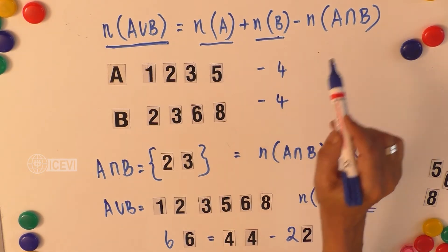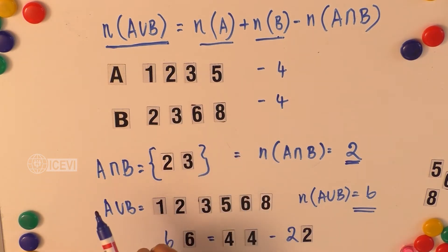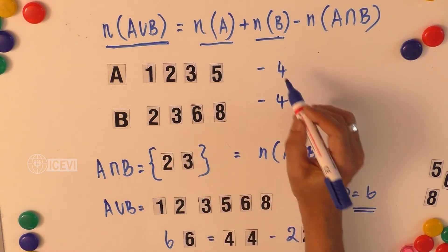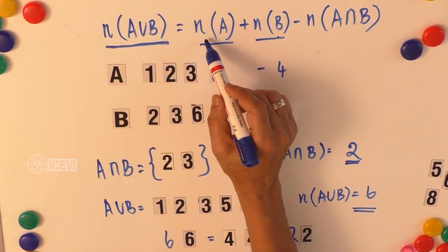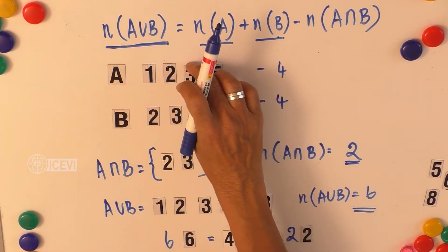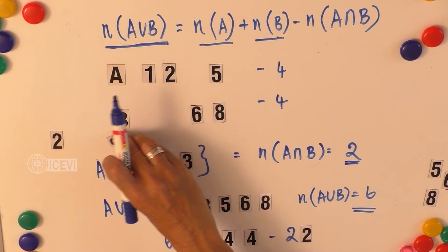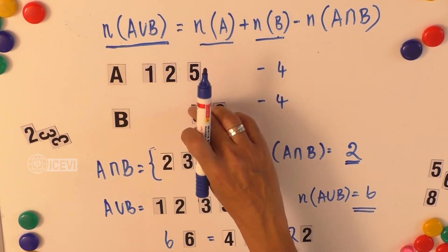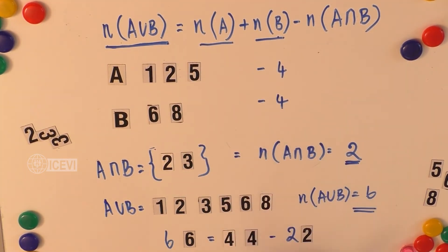In the case of non-overlapping sets, if A and B have no intersection, then n(A∪B) is simply n(A) + n(B). This can be shown by removing the common elements from the sets.